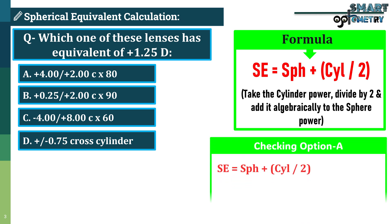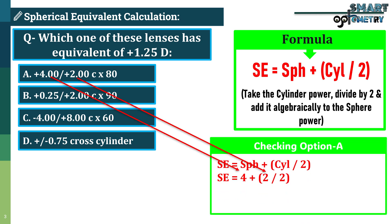Let's check option A. The sphere is plus 4, the cylinder is plus 2. Half of plus 2 is plus 1. So, 4 plus 1 equals plus 5 diopters. This is not our answer.